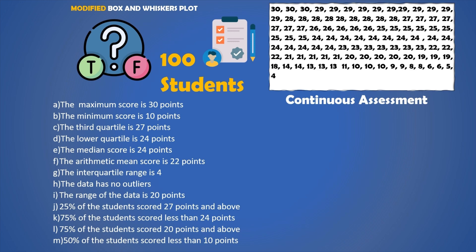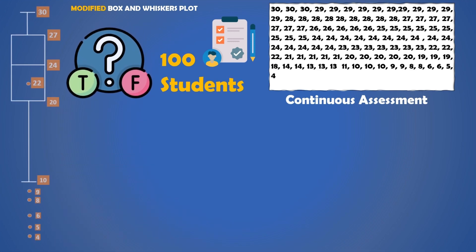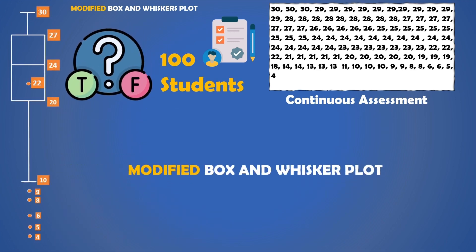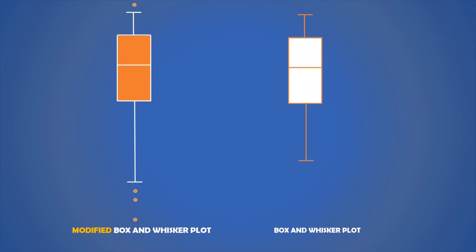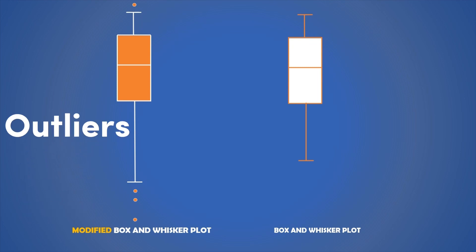So let's answer these questions. First, what is this modified box and Whiskers Plot that the question is referring to, and how is it different from the ordinary box and Whiskers Plot? You will notice that the modified box plot has some points outside the Whiskers area, as opposed to our normal box plot. These points are called outliers. So the modified box plot is just the ordinary box plot modified to show outliers in the data.